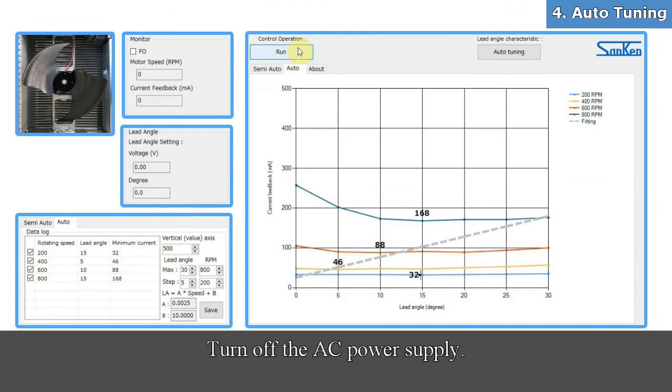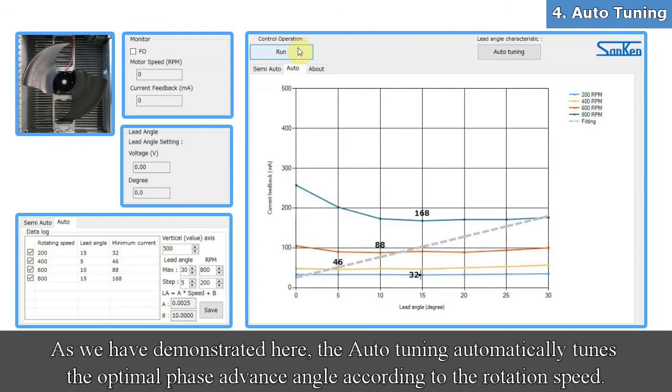Turn off the AC power supply. Now, that's all for the auto-tuning. As we have demonstrated here, the auto-tuning automatically tunes the optimal phase advance angle according to the rotation speed.